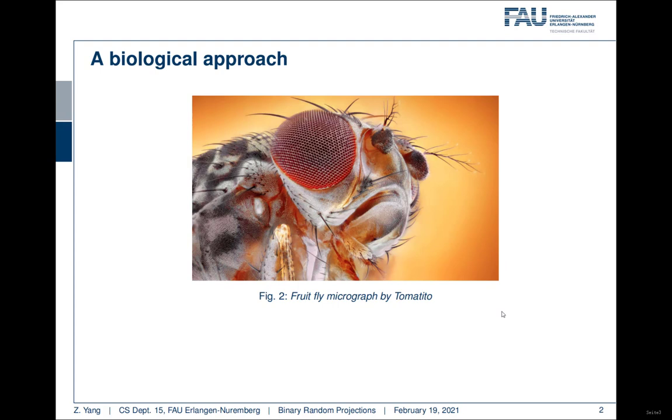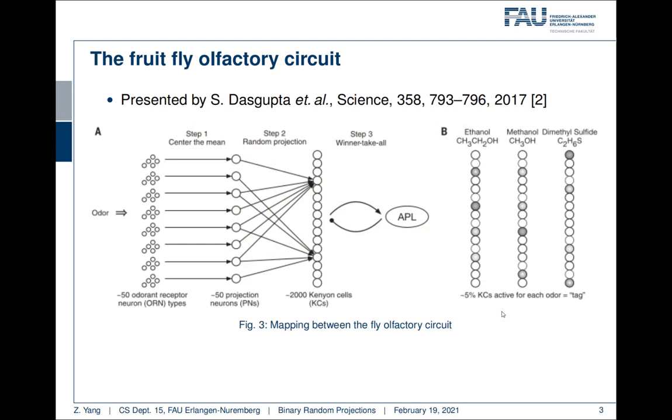A good way to start is to see in the fruit fly. The olfactory system of the fruit fly can distinguish odors. The research team Das Gupta et al. has discovered a neural algorithm from the fruit fly's olfactory circuit as presented in Science 2017.